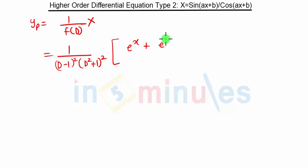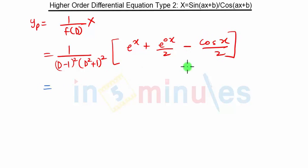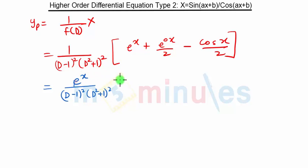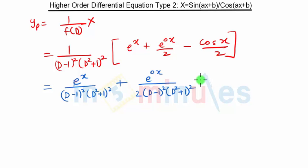Our X is: e^x plus e^(0x) all over 2, minus cos x over 2. Multiplying through, we get: 1/[(D−1)²·(D²+1)²] · (e^x + e^0x) divided by 2, minus 1/[(D−1)²·(D²+1)²] · cos x divided by 2.